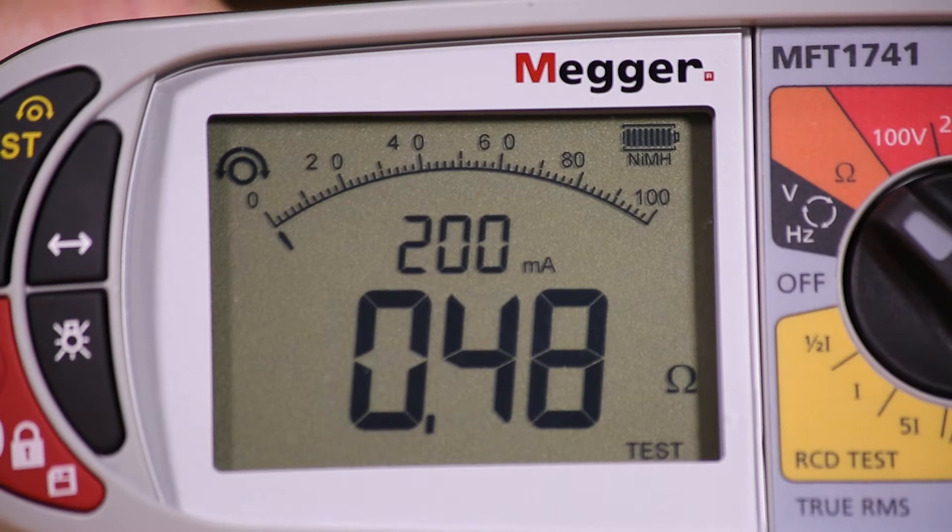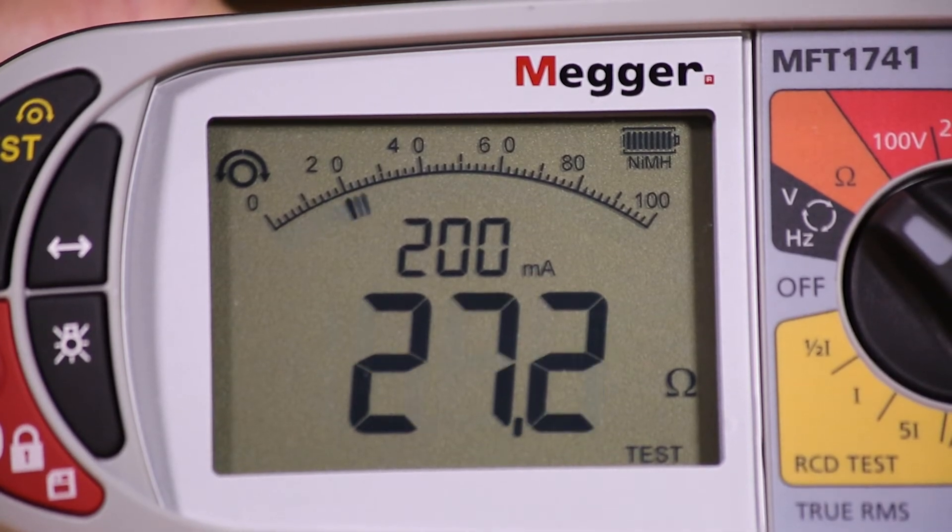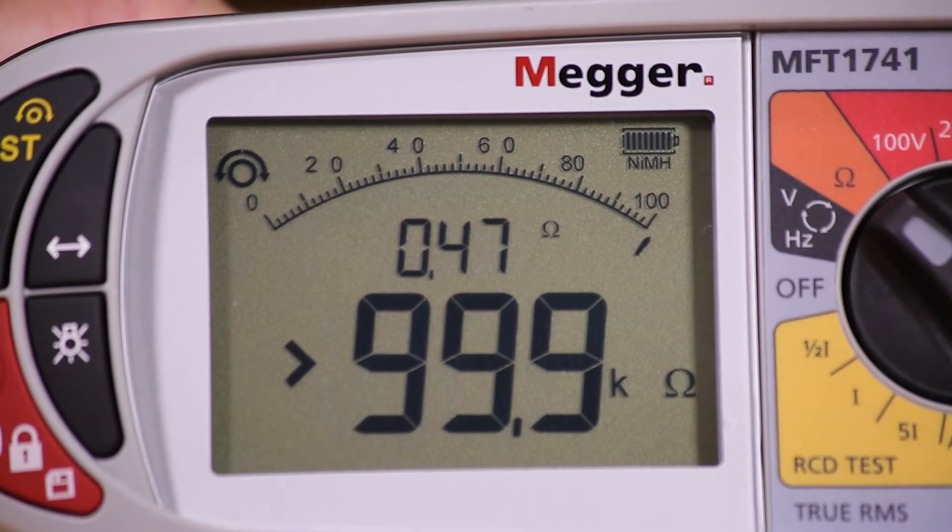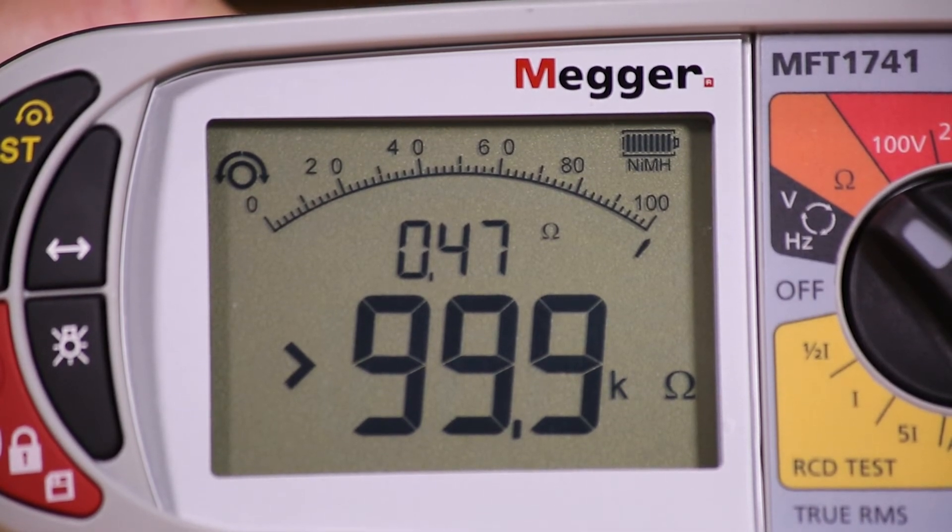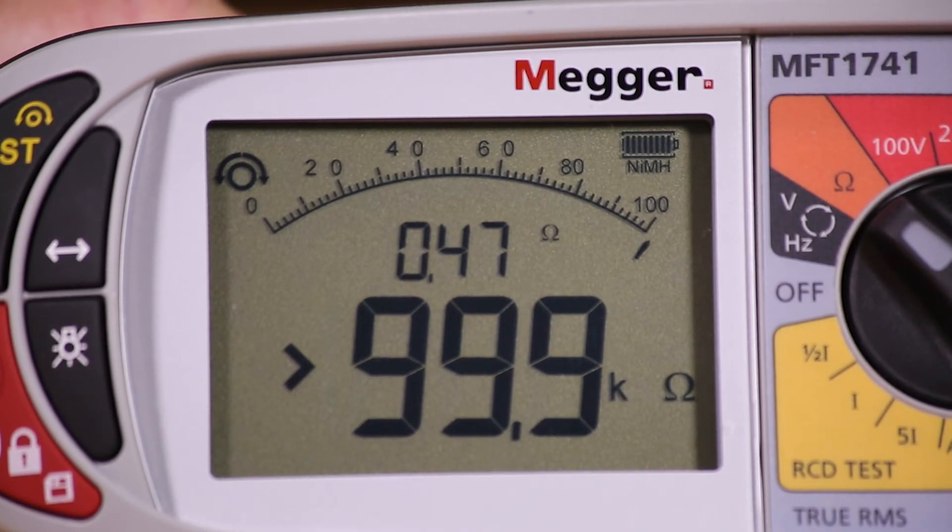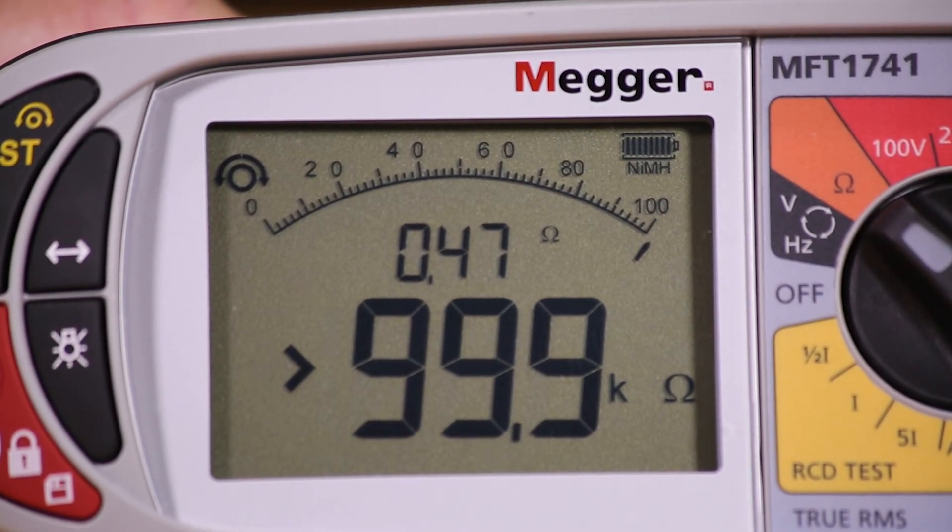Removing the test leads from the circuit will cause the measured value to transfer to the upper of the two displays, and this is kept on screen until the meter is either turned off, a new test is started, or a new range selected.